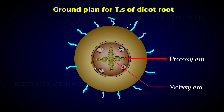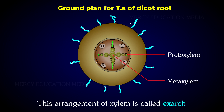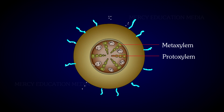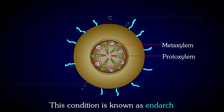In roots, protoxylem vessels are present towards the periphery and the metaxylem vessels towards the centre; this arrangement of xylem is called exarch. In stem, protoxylem vessels are towards the centre while metaxylem is towards the periphery; this condition is known as endarch.